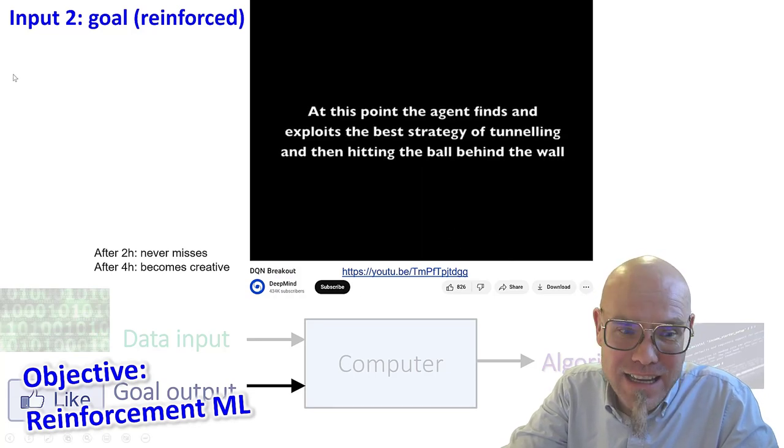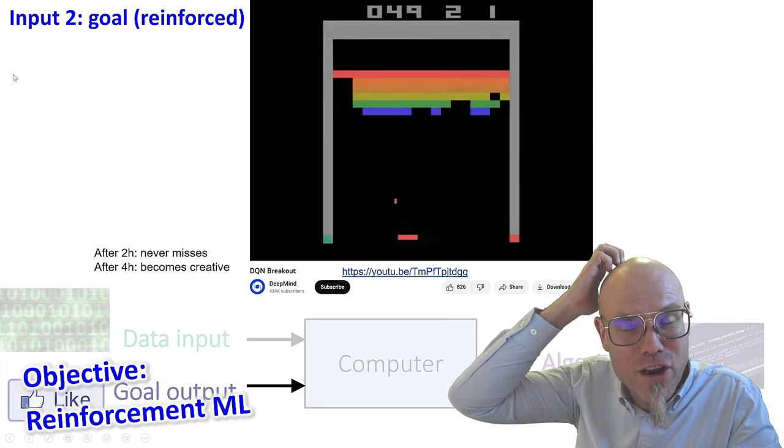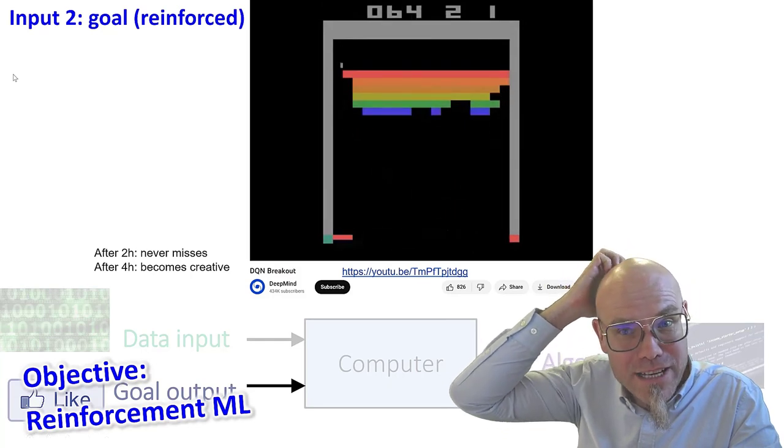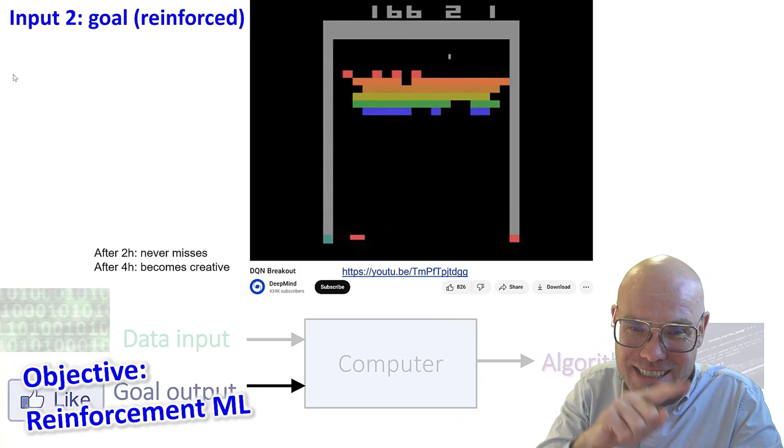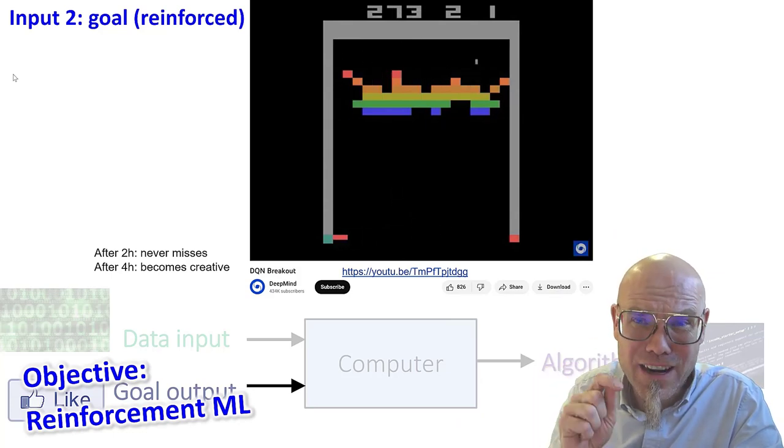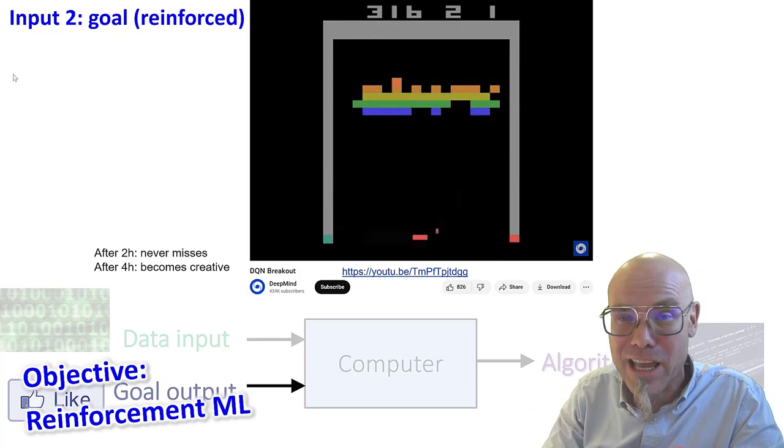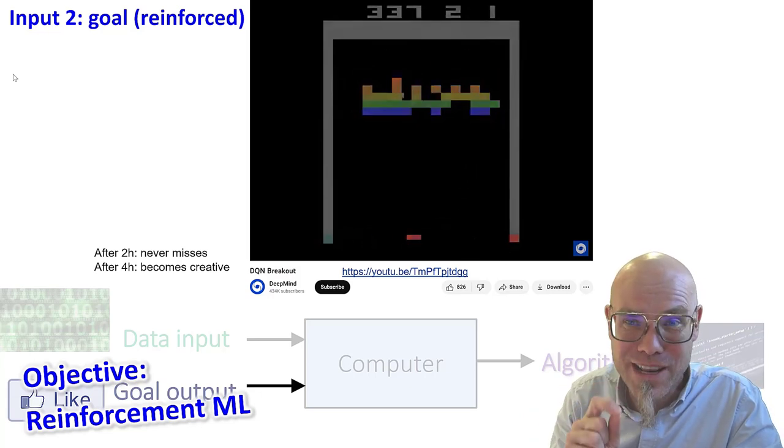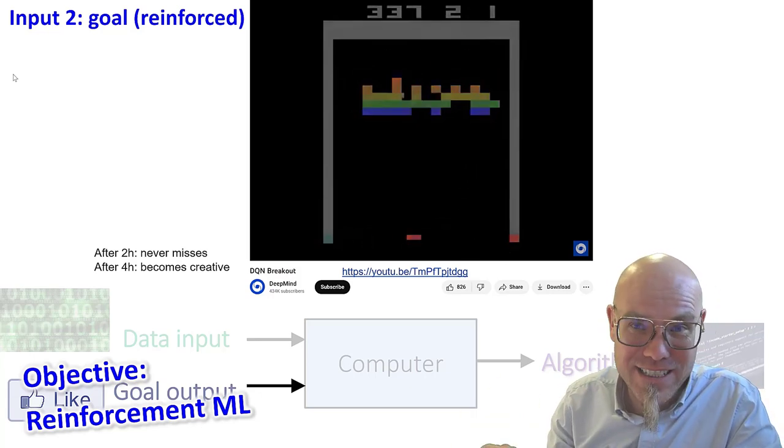Then after six, after four hours, 600 episodes, something very interesting happened. It became innovative. It realized that if it made a tunnel and tunneled the little ball on top, it would rattle down all the points. And from then on, it basically solved the game. The game became very boring, because the machine immediately went to make this tunnel and rattle things down.